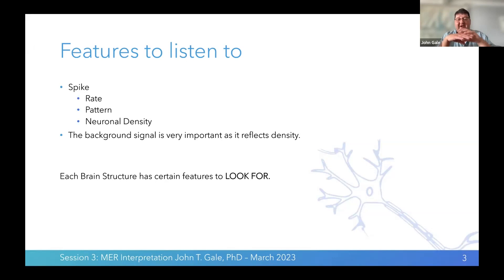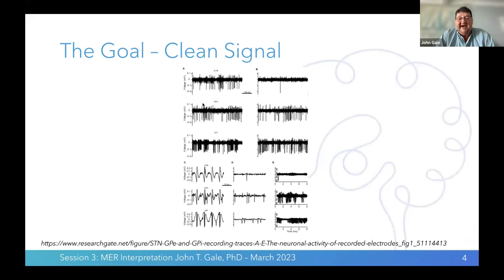Each brain structure seems to have very specific features, and we look at those features to know where we're at. There are diverse firing patterns: a burst type of cell fires rapidly then shuts off repeatedly, while other areas don't have that bursting pattern. These clean recordings allow us to really differentiate parts of the brain.